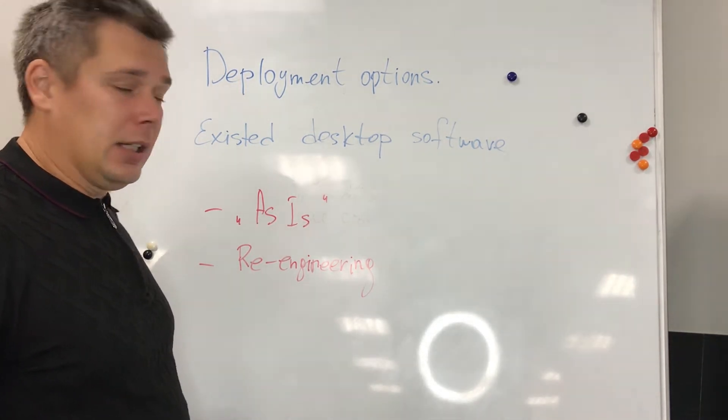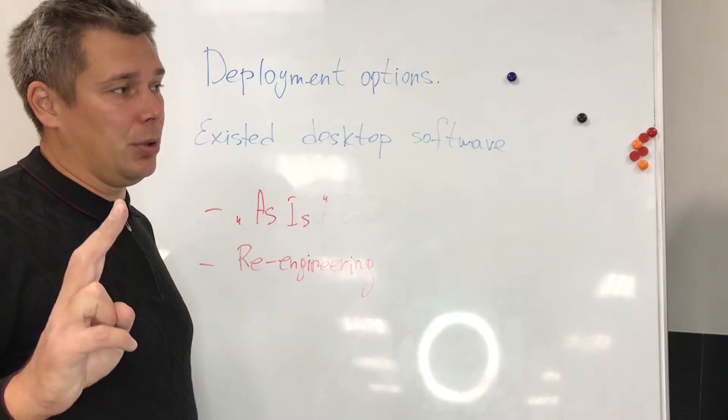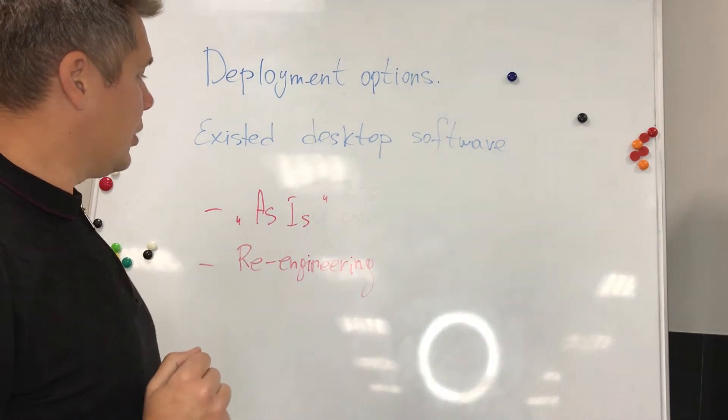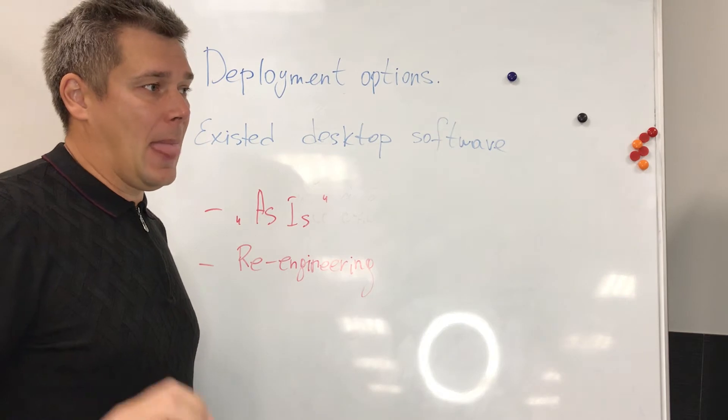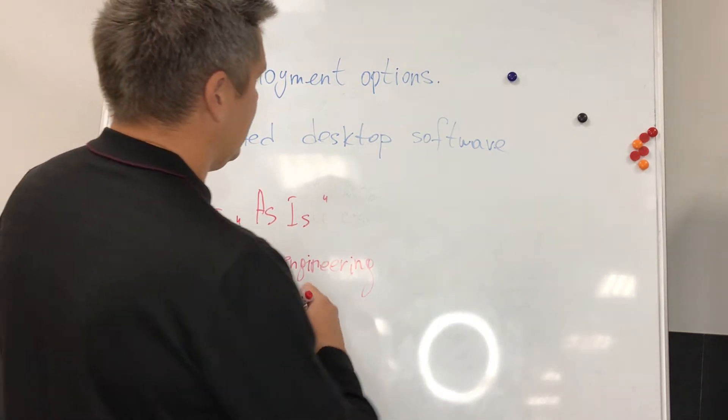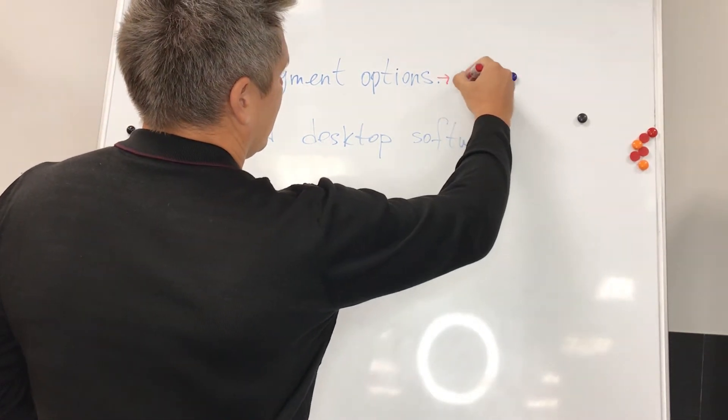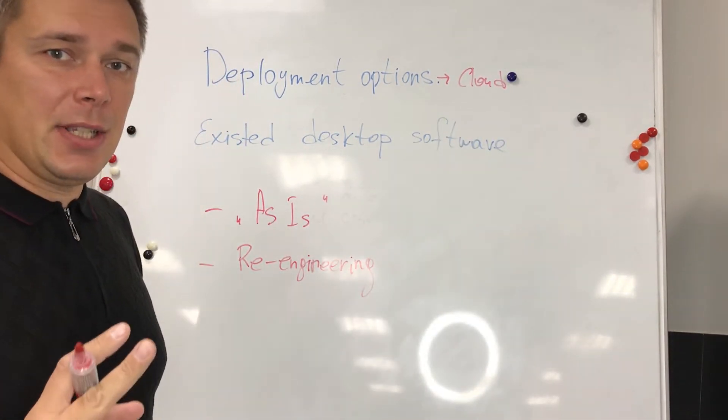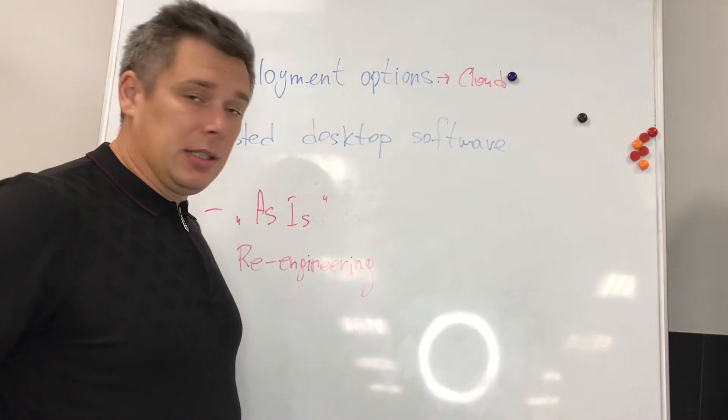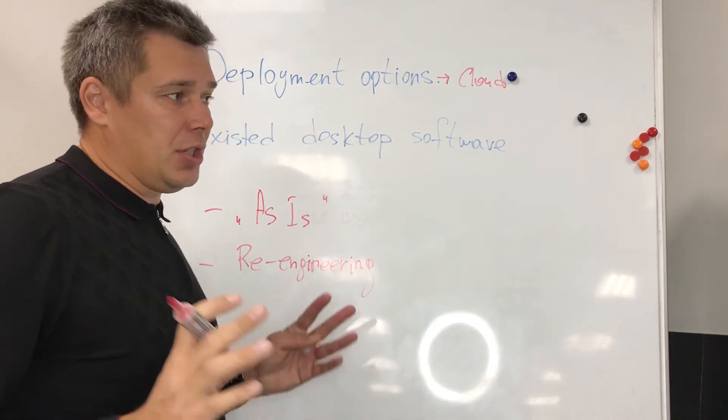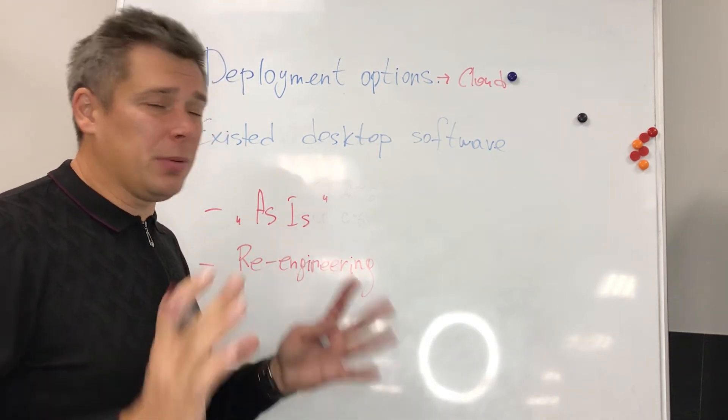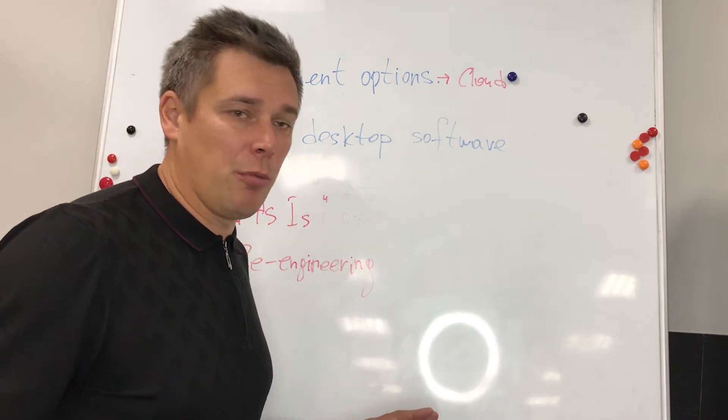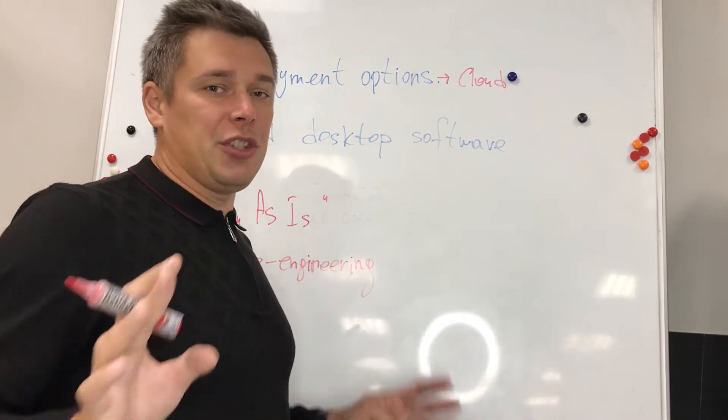And we have two ways how we can deploy this software to the cloud. The first one: deploy it as is, when we just take existing software and deploy it without any redevelopment and improvement. The second way: re-engineering.